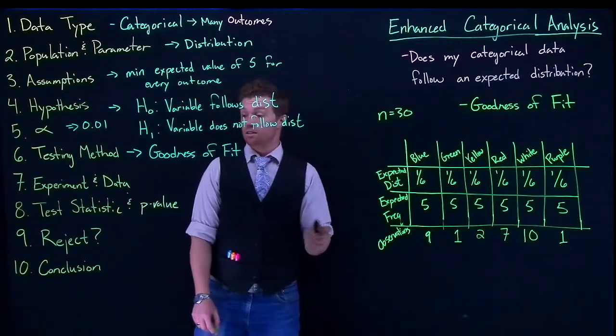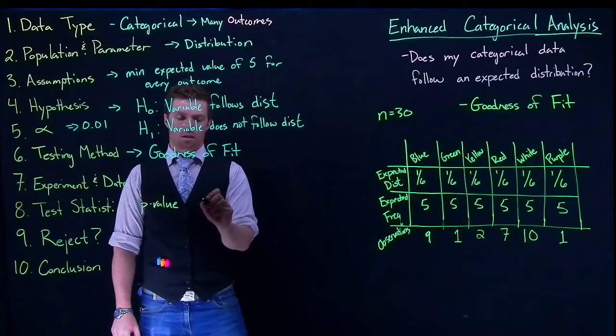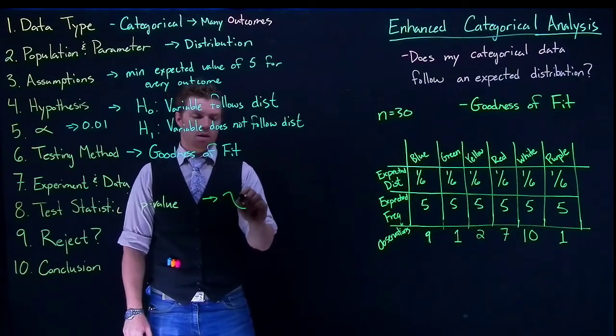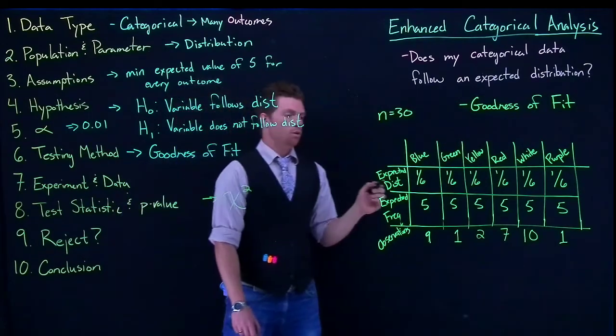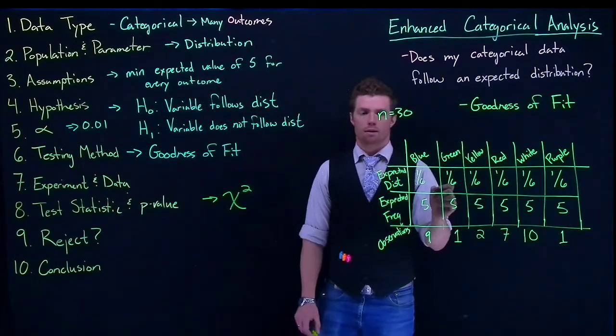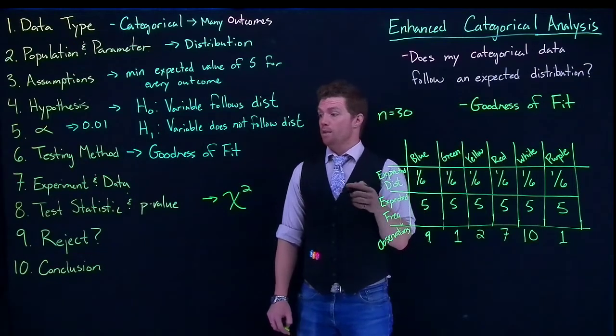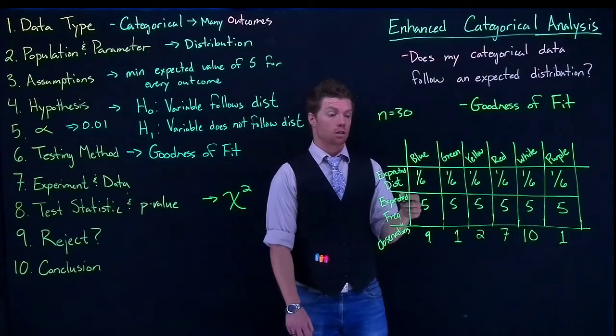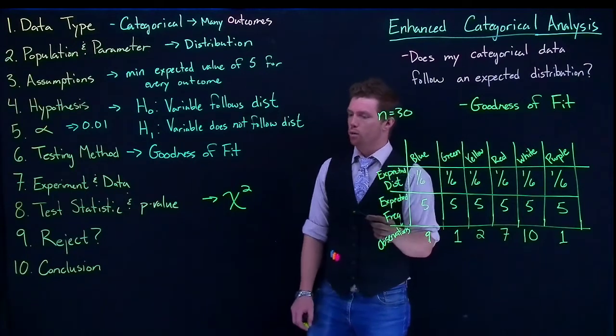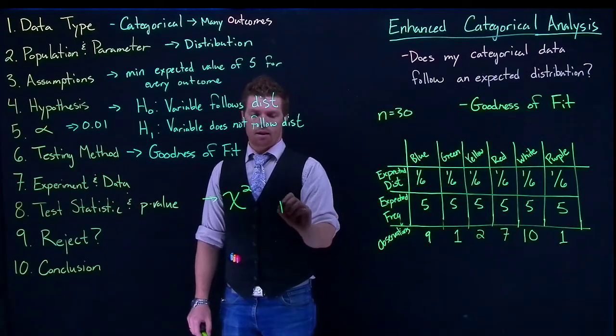Now we can actually calculate out our test statistic. And our test statistic that we are going to get is going to be a chi-squared. And I'll show in another video how we actually, the mathematics that are doing it, and that our software will actually calculate the chi-squared for you and calculate out the p-value.